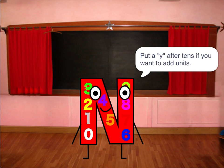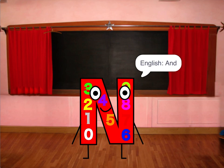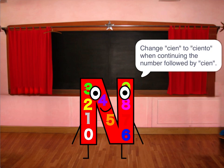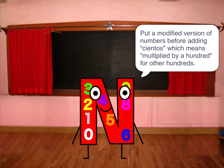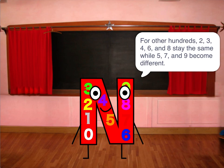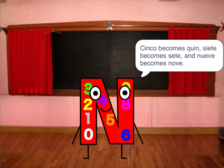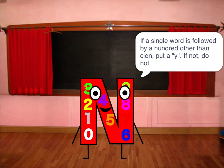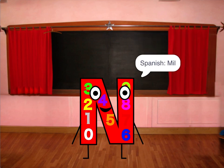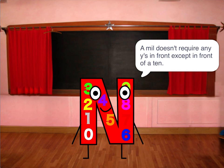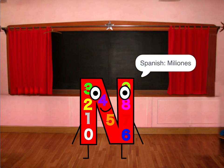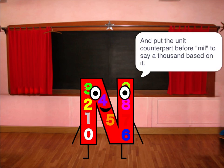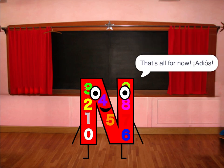Put a y after tens if you want to add units. Change cien to ciento when continuing the number after 100. Put a modified version of numbers before -cientos, which means multiplied by a hundred, for other hundreds. For 2, 3, 4, 6, and 8 the form stays the same, while 5, 7, and 9 become different: 5 becomes quinientos, 7 becomes setecientos, and 9 becomes novecientos. If a single word is followed by a hundred other than 100, put a y; if not, do not. A mil doesn't require anything in front except before a ten. Put the unit counterpart before mil to say a thousand based on it. That's all for now. Adiós.